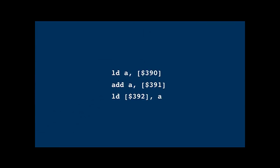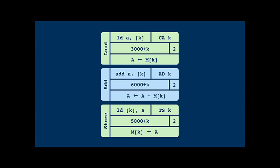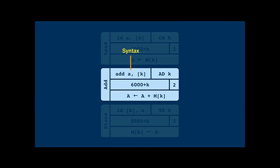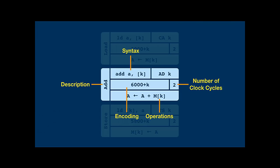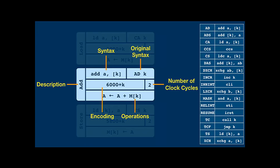Instructions use K as a placeholder for a memory address argument. Each instruction has a short description, the exact operations in pseudocode — for example, add takes memory at address K and adds it to A, the accumulator — an encoding in memory, and the number of clock cycles. The original syntax is the name the original designers gave to the instruction; a more modern syntax makes it easier to describe the CPU both to people with and without a background in machine programming.